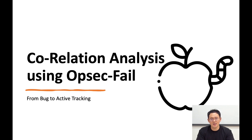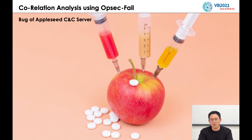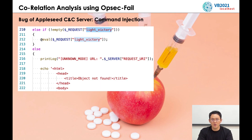Next, correlation analysis using an offset-fail bug in AppleSeed. Among the various malware samples in Operation Newton, we found a bug in the processing of the C2 communication method of the AppleSeed vector. It is unknown whether this bug was intentionally implemented by the Kimsuky group, but it can be triggered from the outside, so command injection and arbitrary command execution are possible. Using this bug, we were able to continue tracking the AppleSeed C2 server operating with the same code.